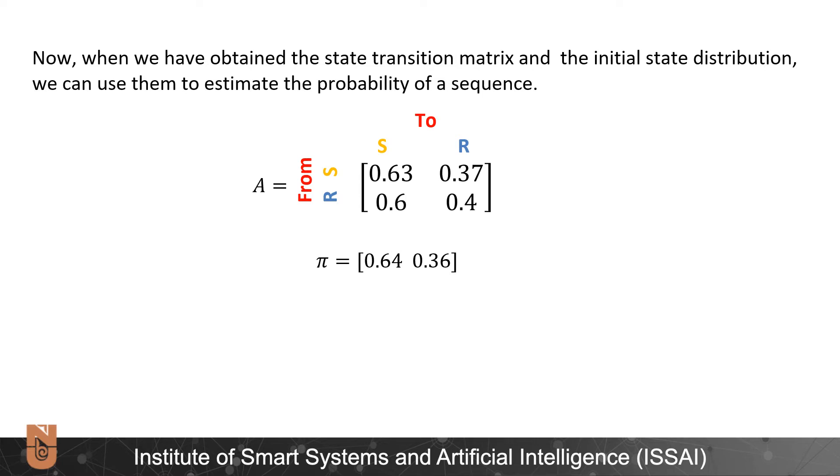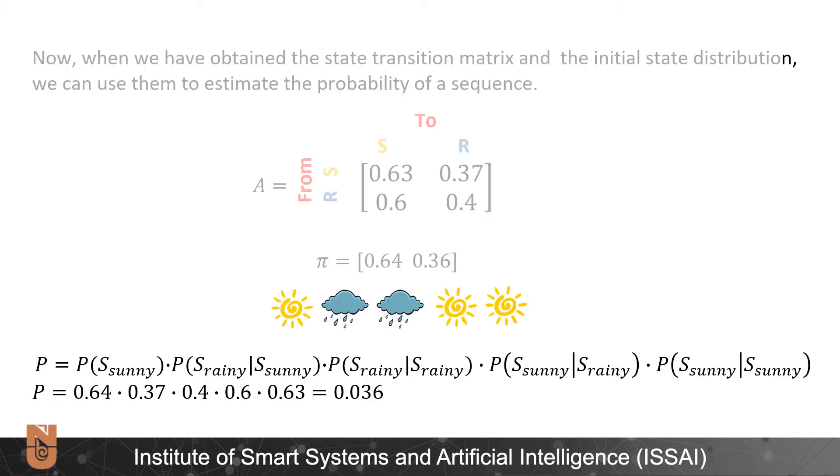Now using these transitions and initial distribution matrices we can estimate for example the probability of a sequence. We have sunny rainy rainy sunny day sequence. So probability is as follows. We take initial distribution probability that today is sunny then multiply by transition probability from sunny to rainy which is 0.37, rainy to rainy 0.4, rainy to sunny 0.6, sunny to sunny 0.63 which gives us overall 0.036.